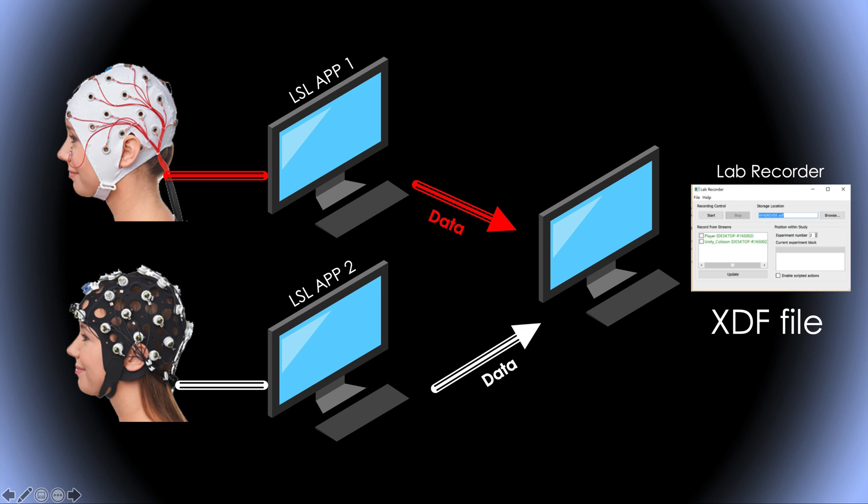Each recorder will transfer the data to the local network, but in addition to the data, the Lab Recorder application will save ping time with each of the two LSL apps every couple of seconds. These ping times are stored in the XDF files and may be used to synchronize the stream when imported in EEGLAB or other software.